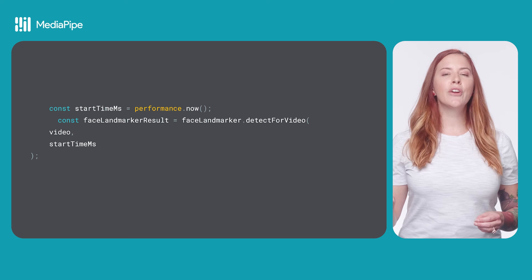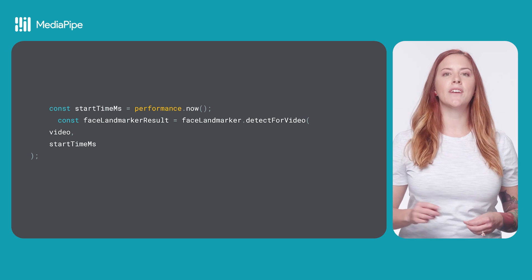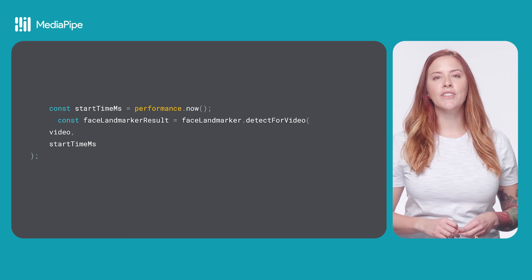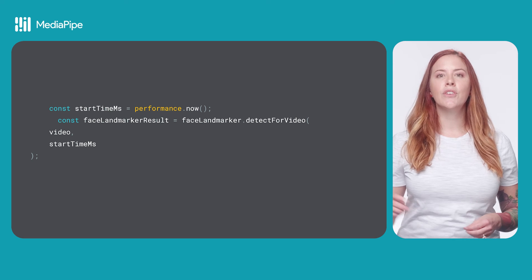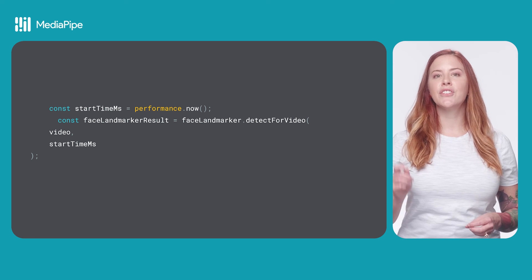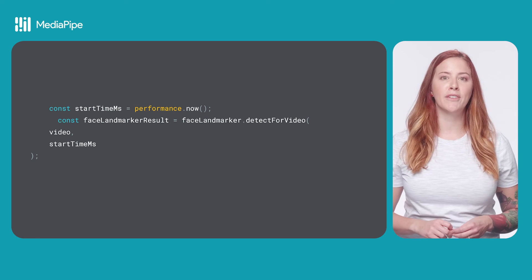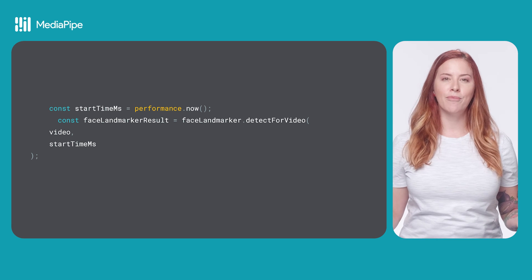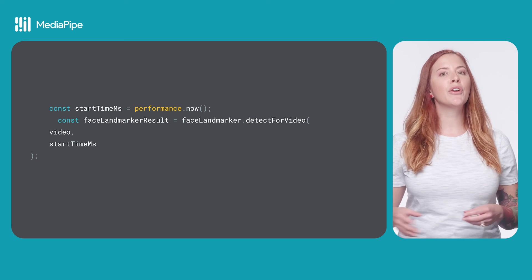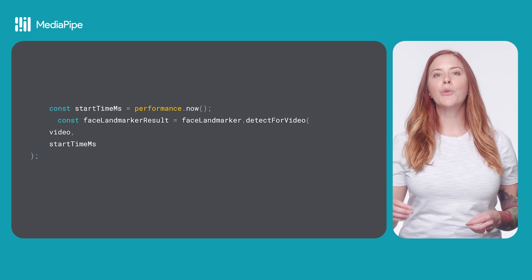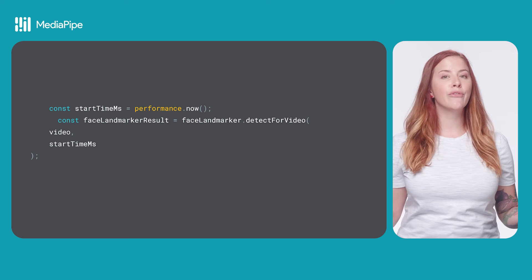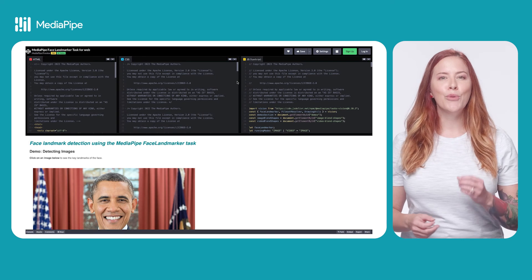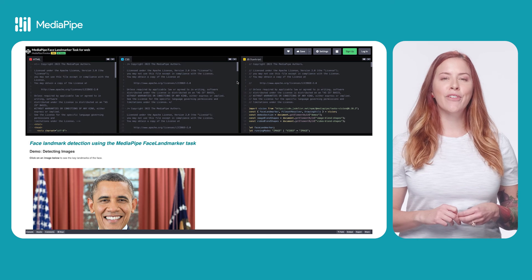To detect face landmarks in frames of a video, get the current time using performance.now(), then get the face landmark detection result using the FaceLandmarker.detectForVideo method, passing your video element and the current time. The face landmark results work the same way for videos as they do for images.